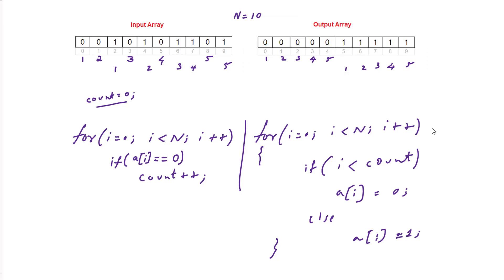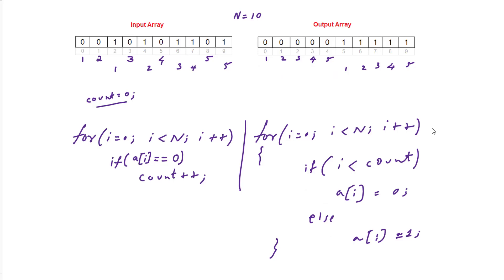So observe: for any index less than count, fill with zero; for any index greater than or equal to count, fill with one. That's the first step and the second step. Now let me write the final step, which is displaying the resultant array — that is very straightforward.